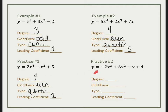Go ahead and try practice number 2 on your own — pause here. Check your work: the degree is a third power, which is odd. The name of a third power polynomial is a cubic, and my leading coefficient is negative 2.